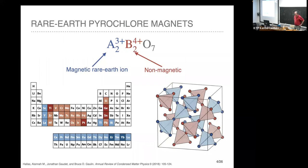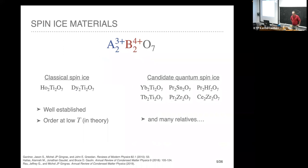Now for a materials motivation — if you're not interested in materials you can switch off for the next few slides. Rare earth pyrochlore magnets: a lot of frustrated magnetism takes place on the pyrochlore lattice, which consists of corner-sharing tetrahedra. For strongly frustrated systems on the so-called A-site, there is a magnetic rare earth ion, and because of the coupling in tetrahedra this is highly frustrated. All of this started in the late 90s when Harrisn and Bramwell recognized that holmium and dysprosium titanate were very special — they found a residual entropy at low temperatures.